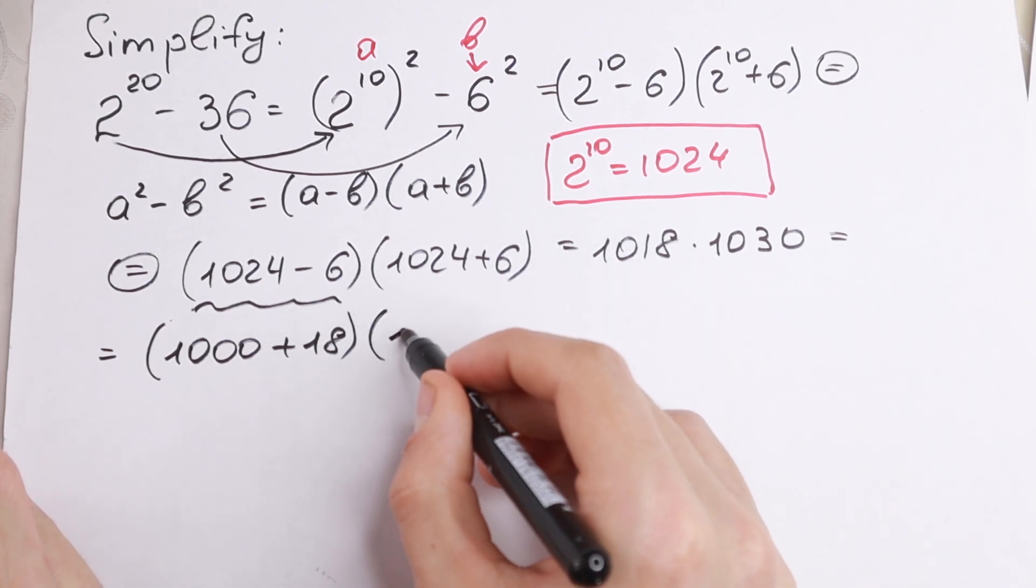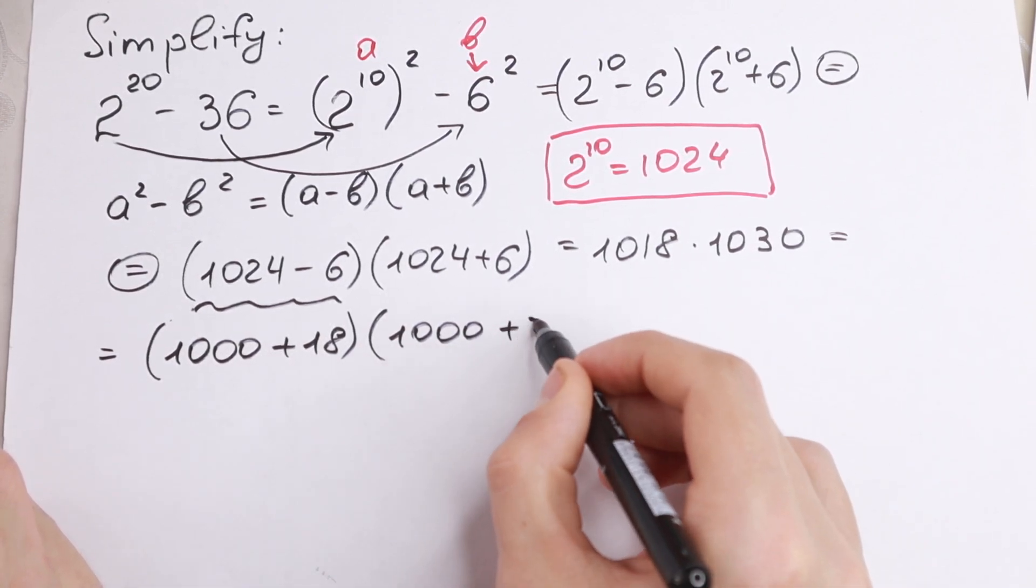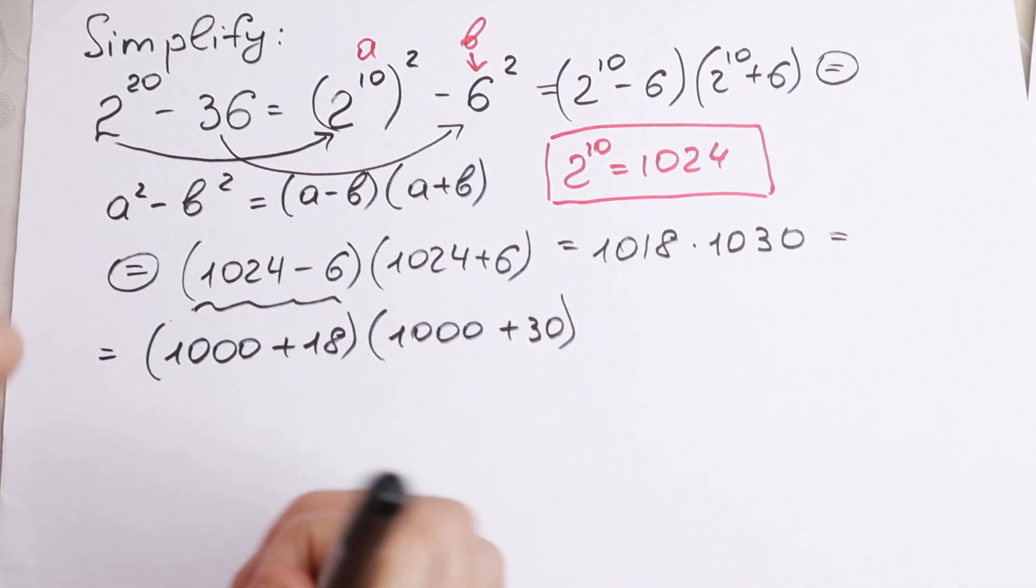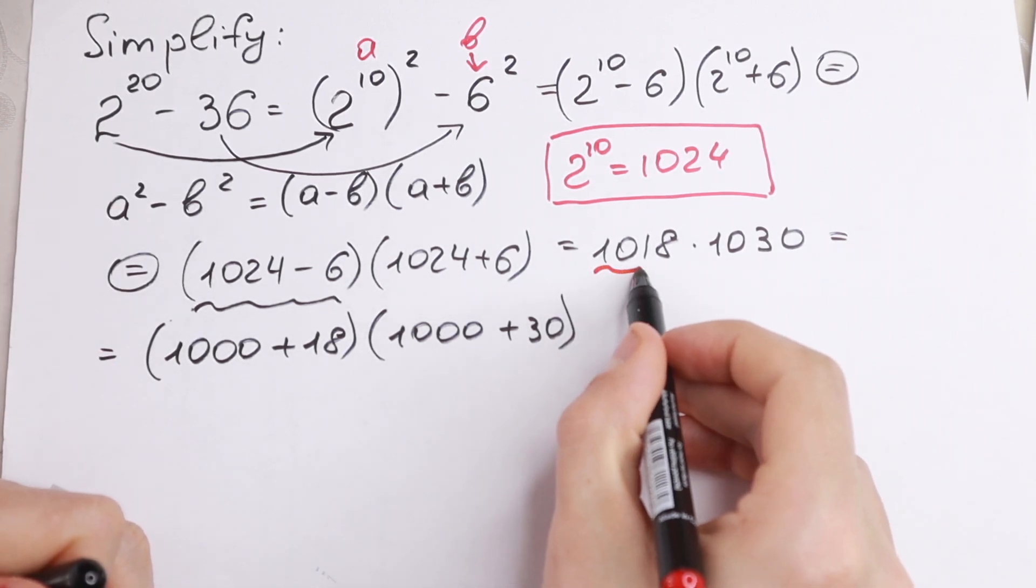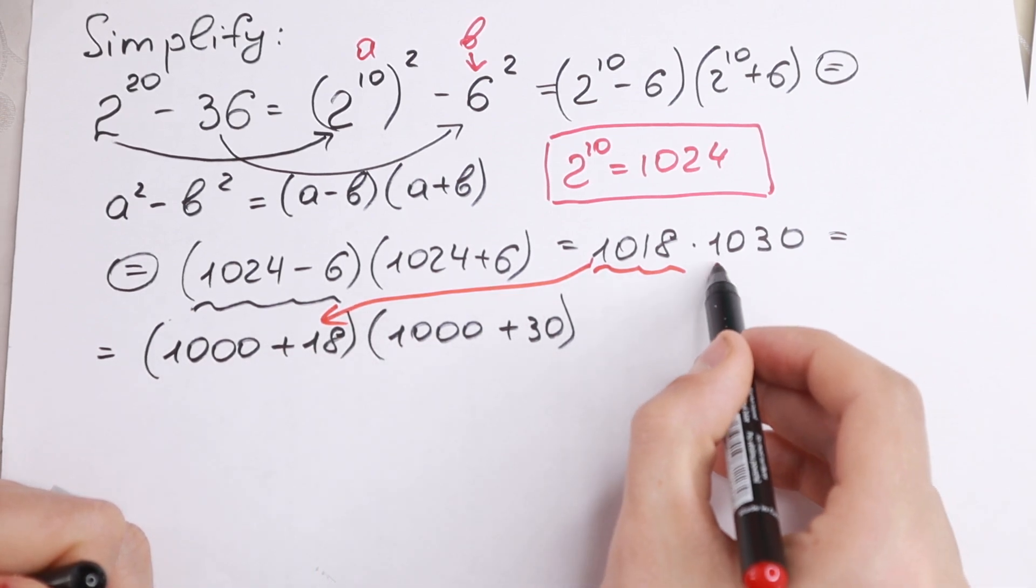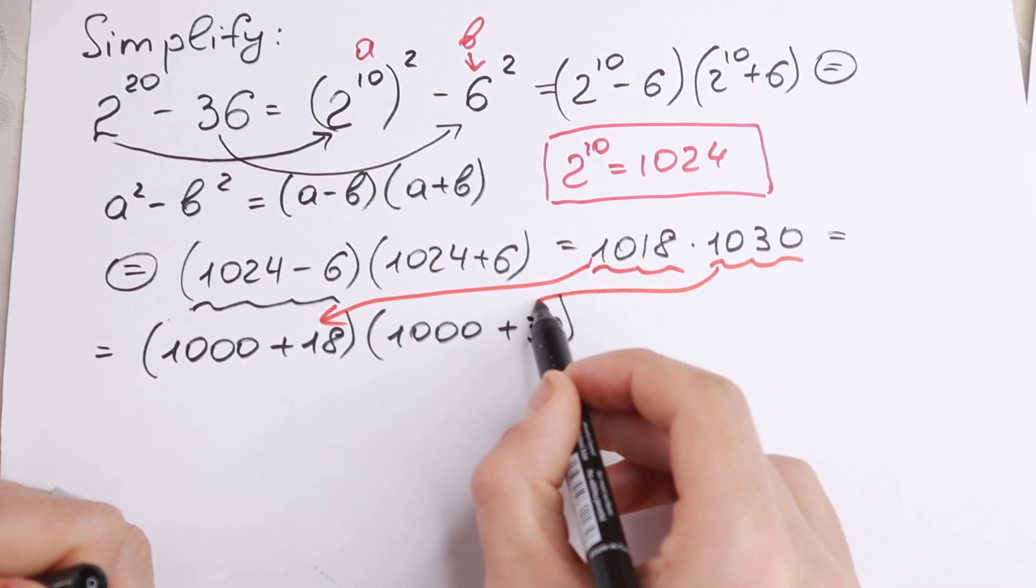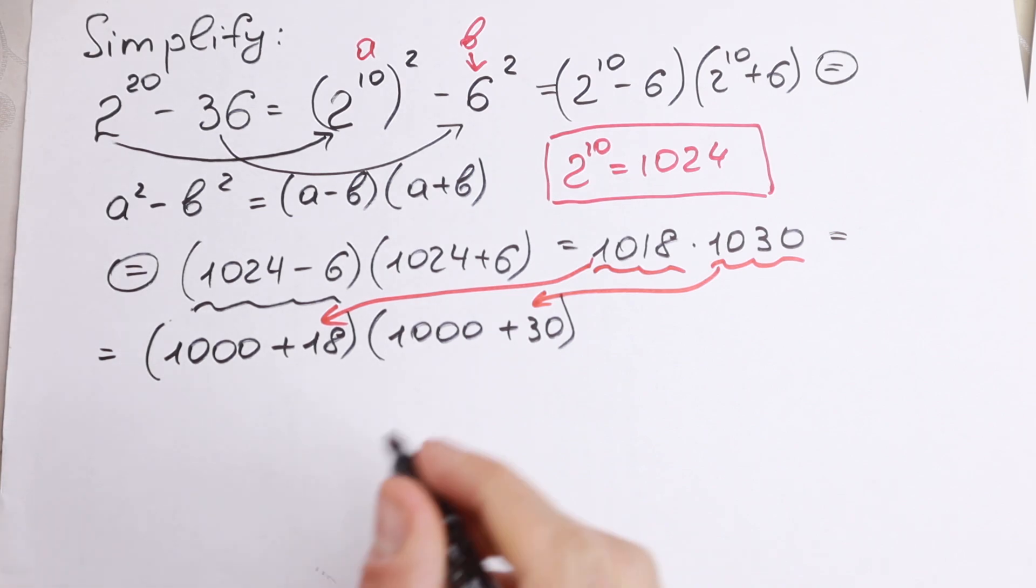And right here, in the same way, 1000 plus 30. So we just express this 1018 as right here and 1030. I hope you understand it. We just express as a sum of 2.